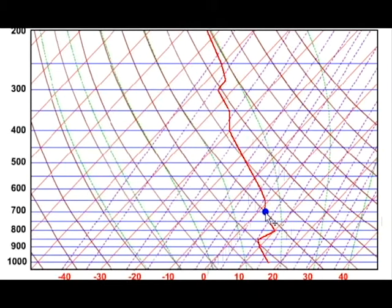So to lift this parcel, I simply just follow this dry adiabat up to 500 millibars. Let me turn that path on for you. So here we go. So this is what this parcel looks like if it were forced up to 500 millibars.